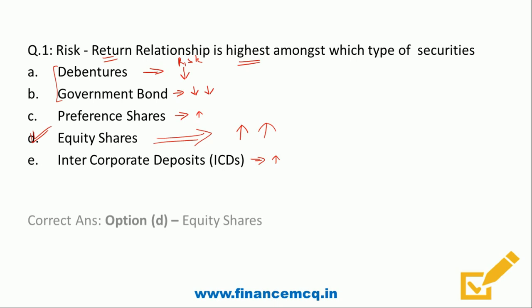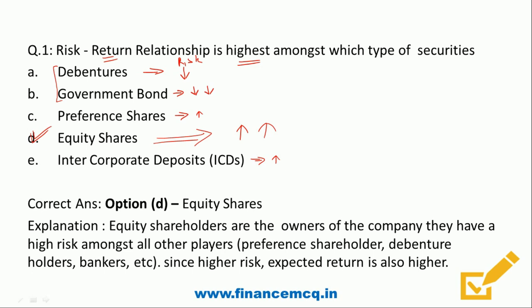So the highest risk-return relationship is amongst equity shares. The correct answer is Option D: Equity shares.